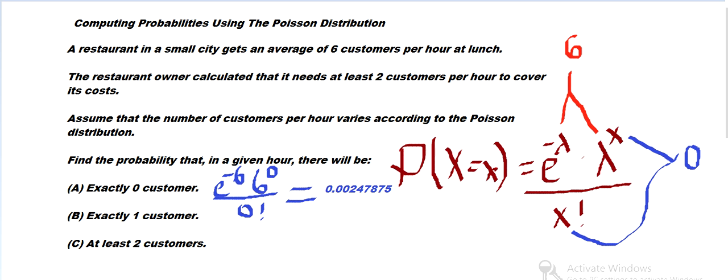And then for exactly one customer, same formula. E to the minus six, six to the one over one factorial, that's going to give 0.01487.